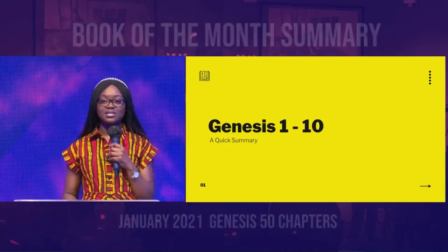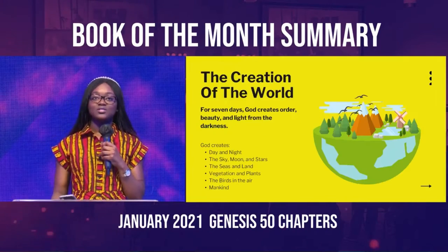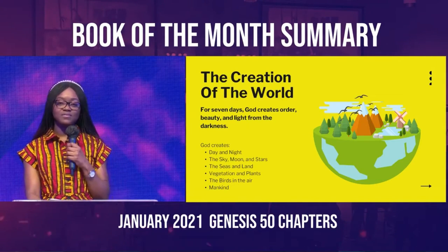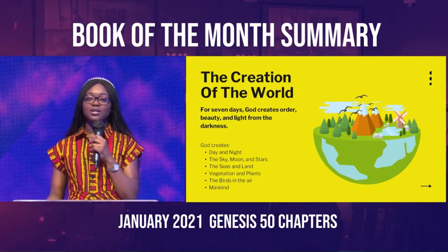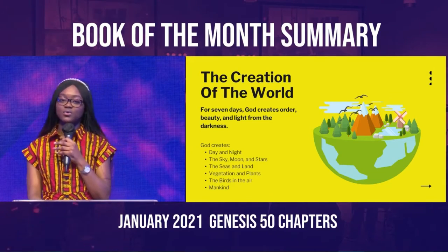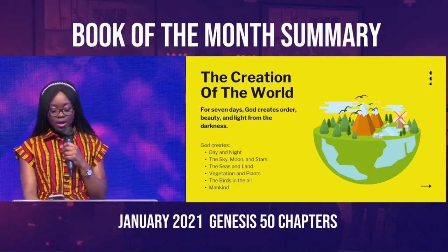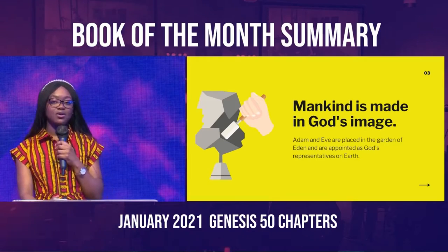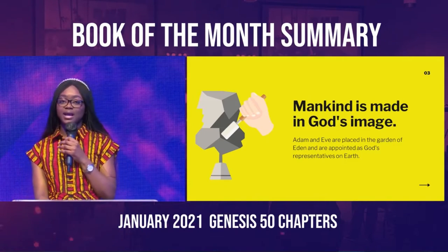The book of the month for January is Genesis, and we're going to be doing a quick summary of the first ten chapters. In the first few chapters of Genesis, we learn about the creation of the world. God created the world in six days and rested on the seventh day. One of the last things God created was mankind — Adam actually means mankind.